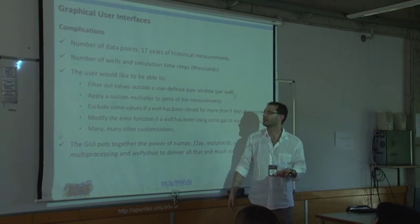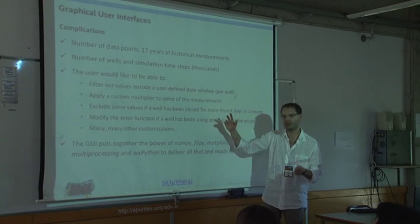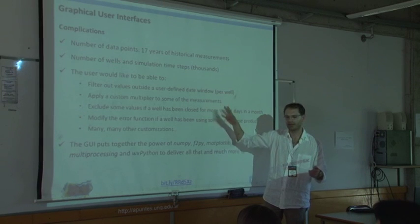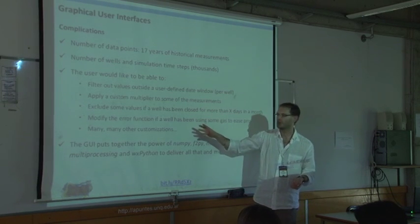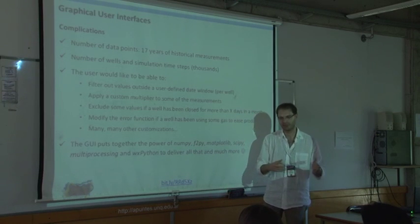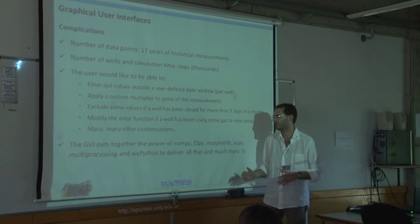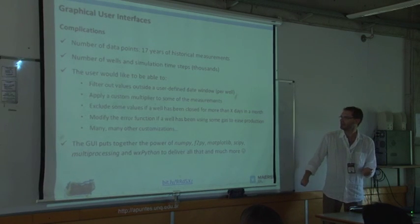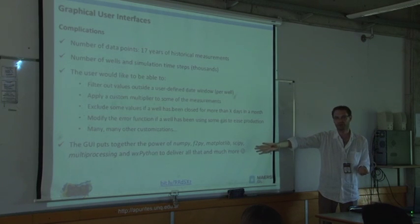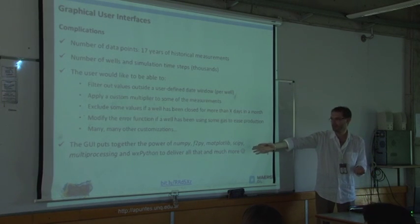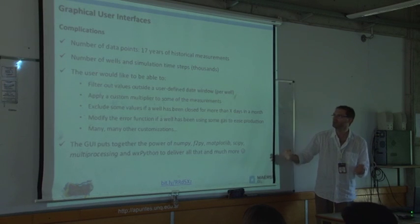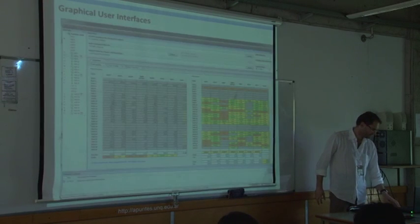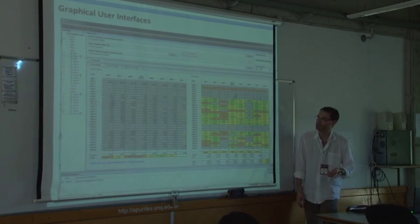Plus they asked me, well, we want a way to change the formula you use to calculate the error. We want a way to filter out some values we don't like. We want a way to apply a multiplier for the oil production for that well but not the other well. So it started to become a bit overwhelming. But then, I put together everything that I've shown you up to now: NumPy, F2Py, Matplotlib, SciPy, and multiprocessing. Together, plugged in a WxPython generated user interface.